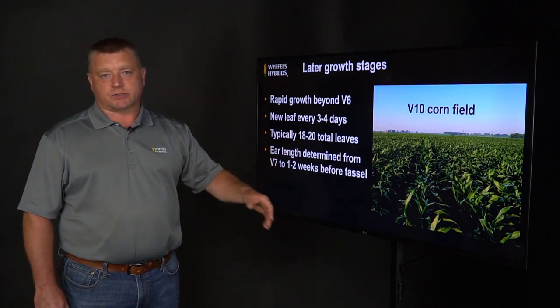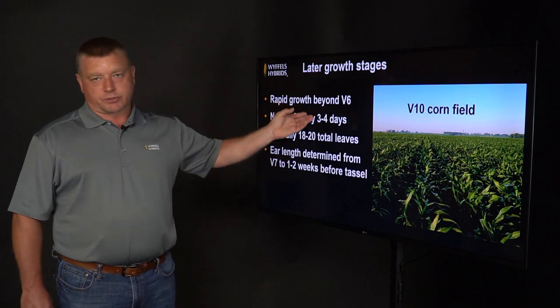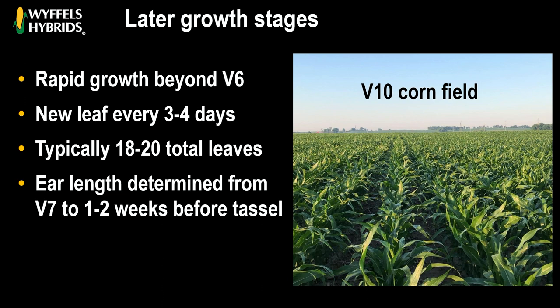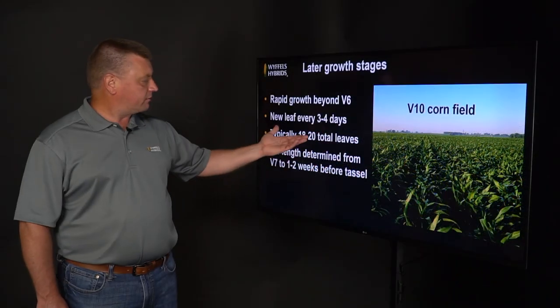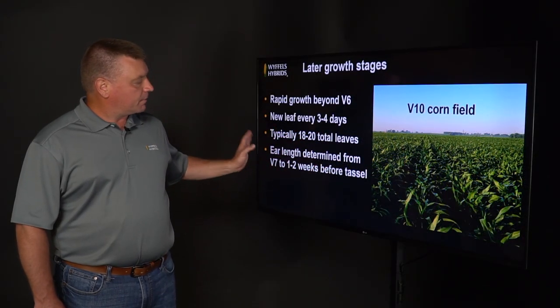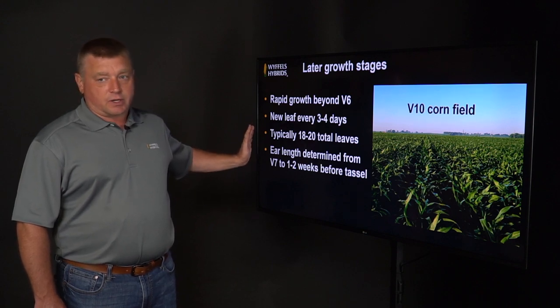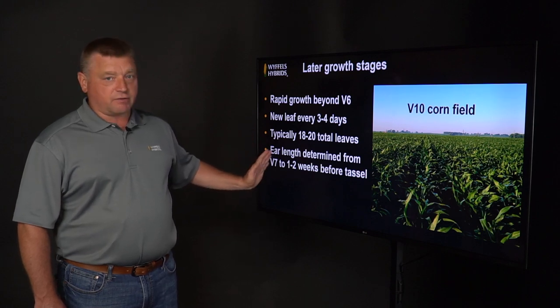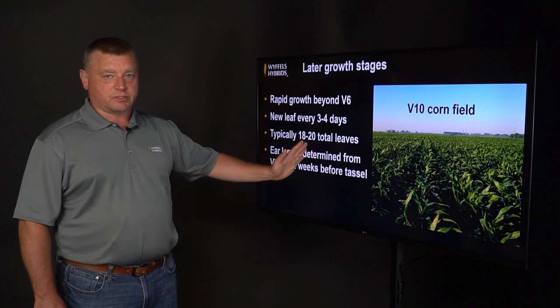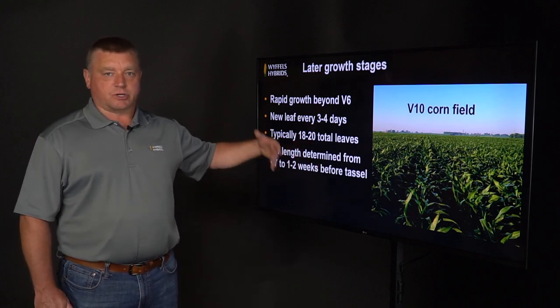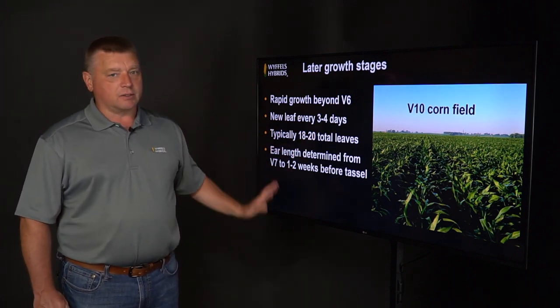From V6 all the way up to tassel, the corn plant is in the rapid growth stage — getting taller, accumulating more leaves and above-ground tissue, while below ground we're getting aggressive root growth. Depending on heat, a new leaf emerges every three to four days, and typically the corn plant will have 18 to 20 leaves by the time it tassels. From a yield standpoint, ear length is being determined from about V7 up to one to two weeks before tassel emergence, so any stresses during this period can impact ear length.